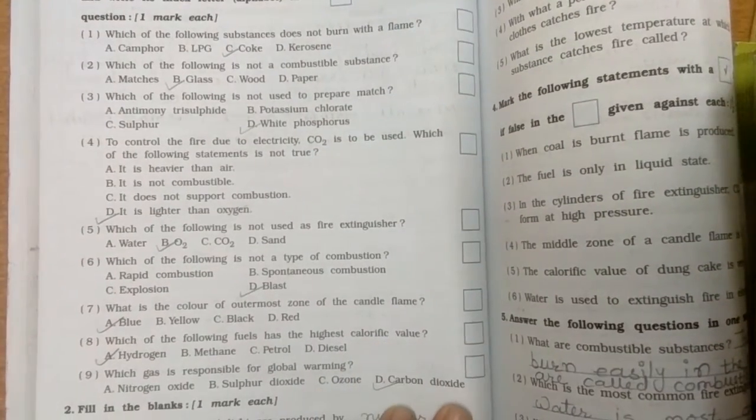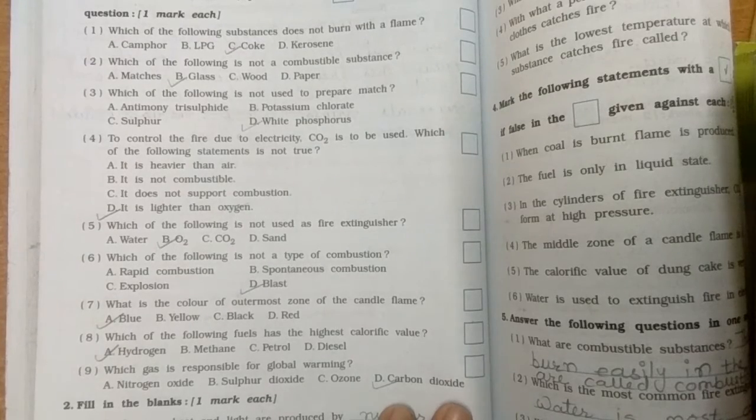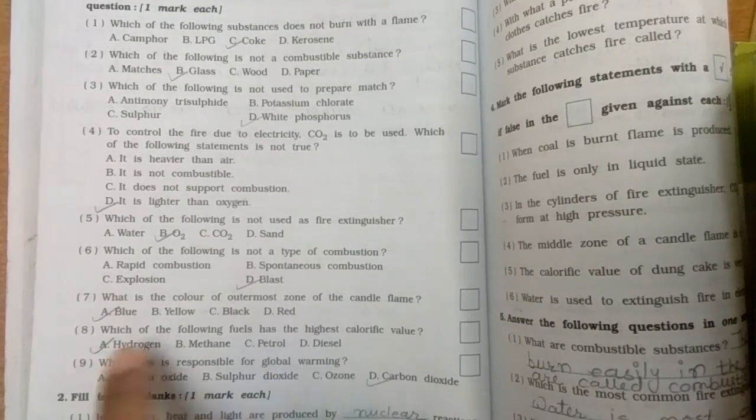Five, which of the following is not used as a fire extinguisher? Oxygen. Six, which of the following is not a type of combustion? Blast. Seven, what is the color of outermost zone of the candle flame? Blue.